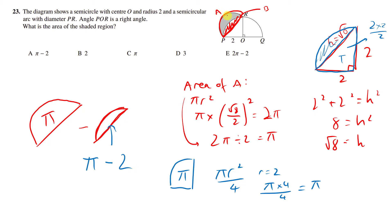So my grey shaded bit is just going to be pi, this whole semicircle A, minus that slither, which is pi minus 2. And so I actually just get an answer of 2.